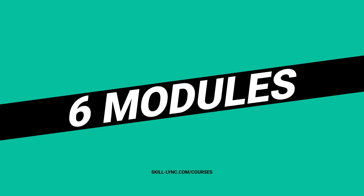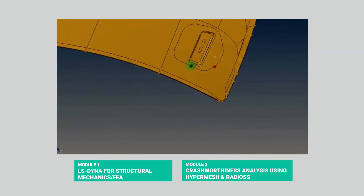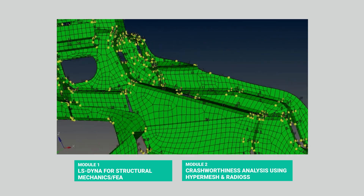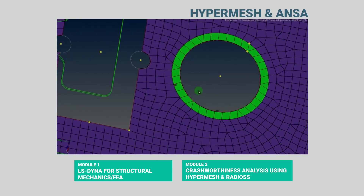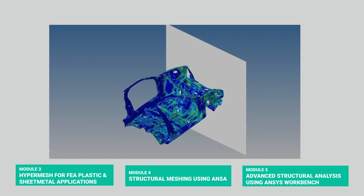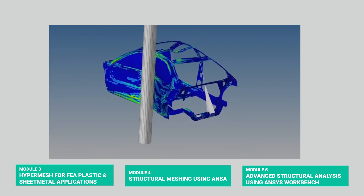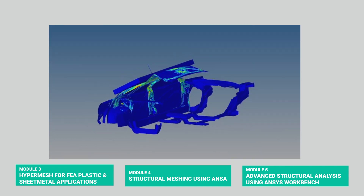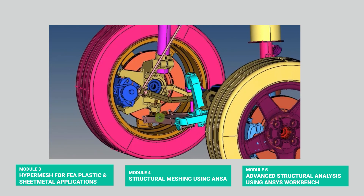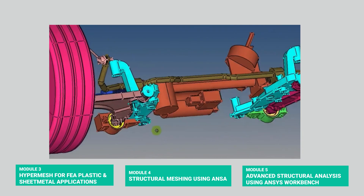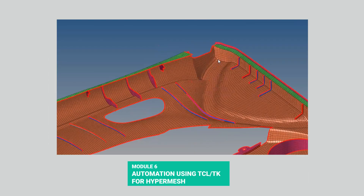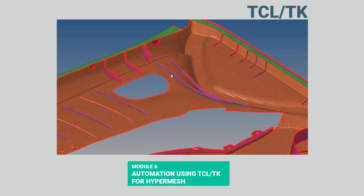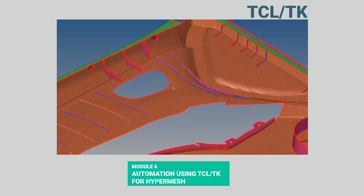The course has six modules. In modules one and two, you will learn meshing and model building of sheet metals and plastic components using HyperMesh Enhancer. In modules three, four, and five, you will learn how to carry out simulations on the components that replicate real-world behavior. Further, you will also learn how to analyze and apply the results. In module six, you will learn how to automate the complete process using TCL-TK to create scalable solutions.